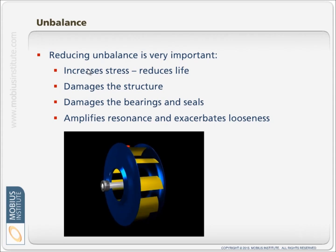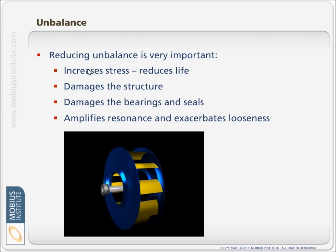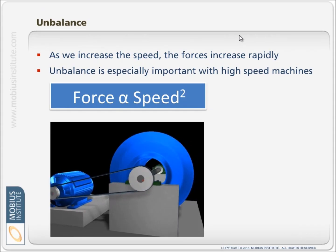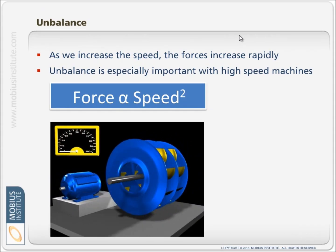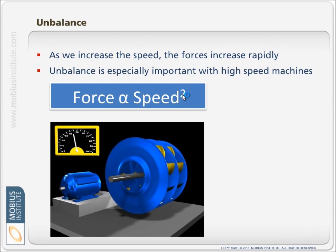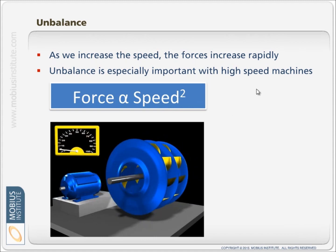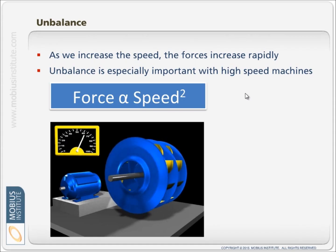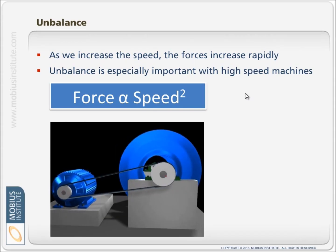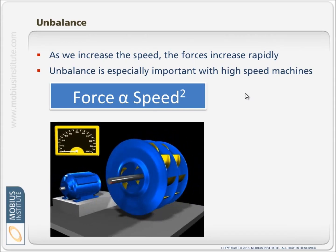Similarly, if there is any looseness, then unbalance drives that looseness — if it's loose, we get more motion when there's more unbalanced vibration. Another key thing about unbalance is that the forces generated are proportional to the speed squared. So if we double the speed, we get four times the amount of force or motion, as this animation shows. Therefore, for a high-speed machine, unbalance is extremely important and it is critical to minimize it as much as possible.